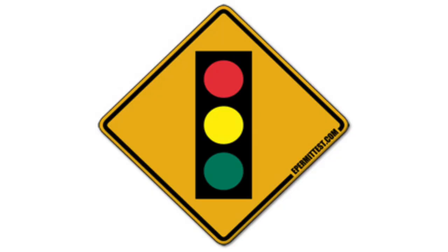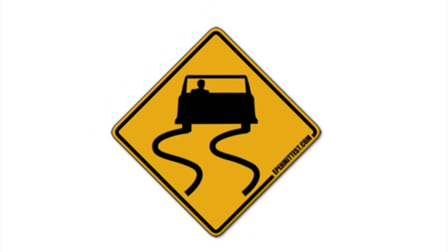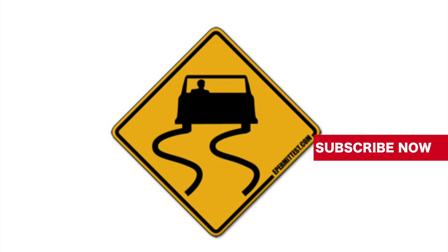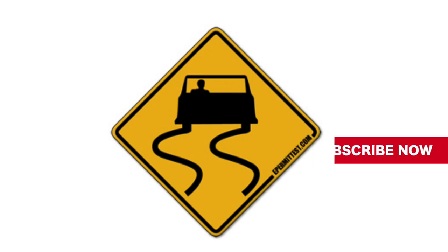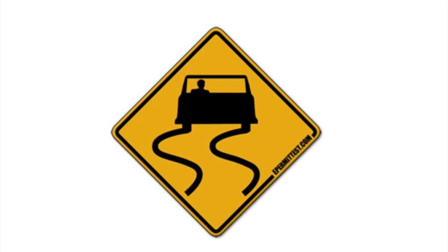Traffic signal ahead means slow down and be prepared to come to a complete stop on the red signal. Slippery when wet: this sign means that when pavement is wet, reduce your speed. Do not brake hard or change direction suddenly. If you need to negotiate a sharp turn, do so slowly. Increase the distance between your car and the one ahead. These actions are needed on all wet roads and especially on roads where this sign is posted.